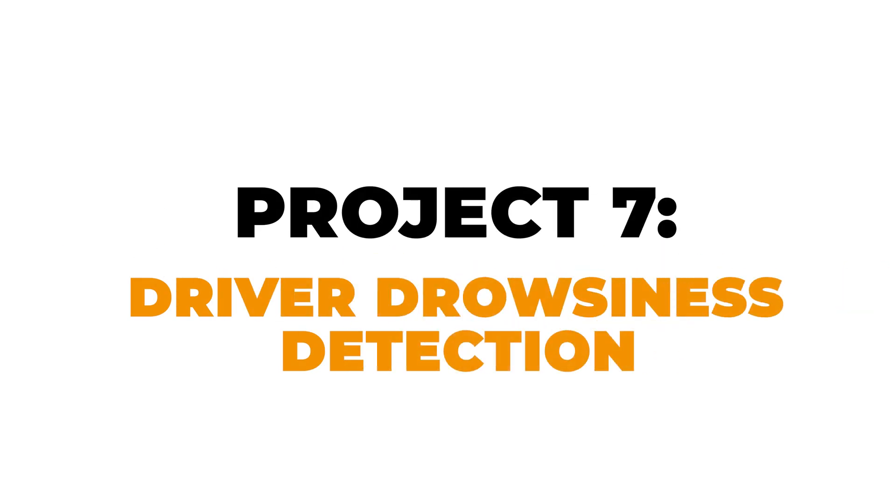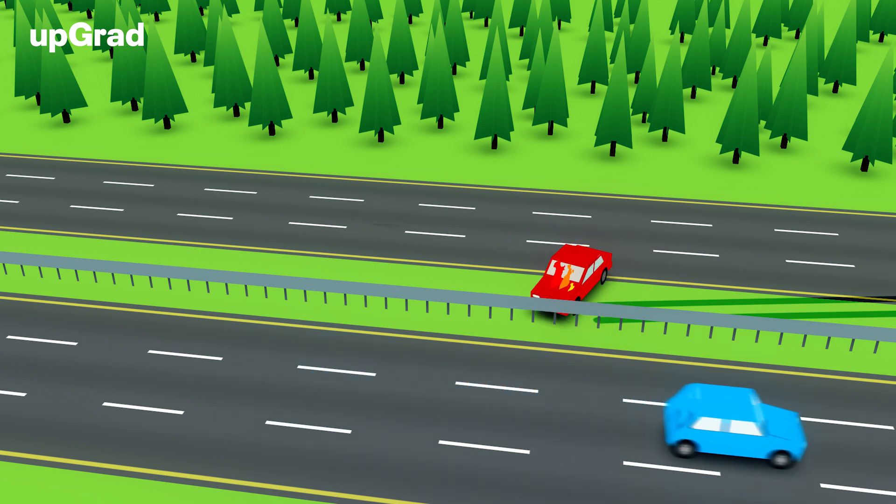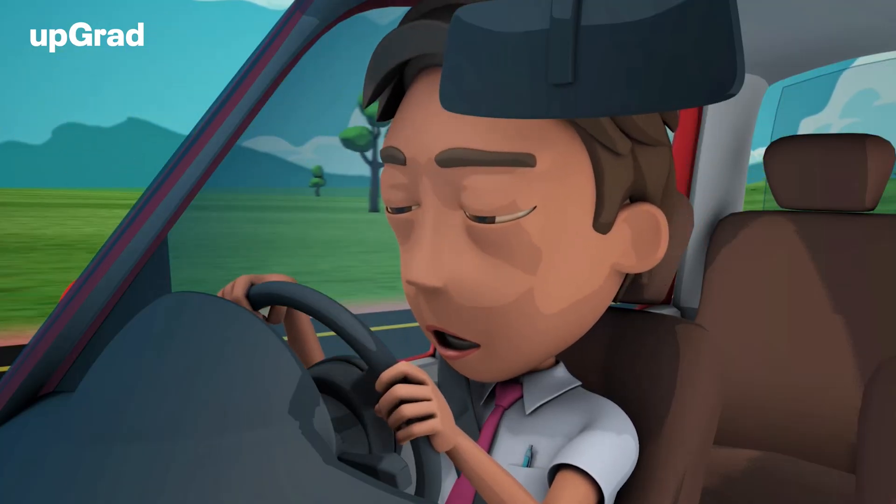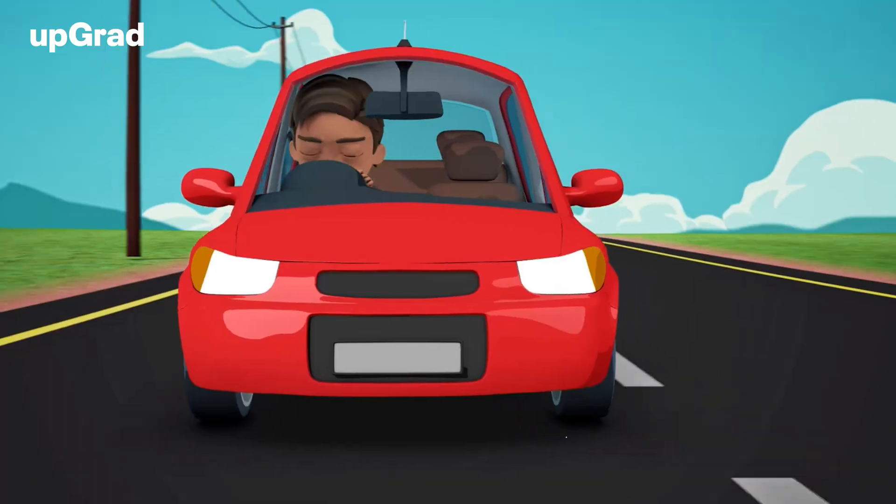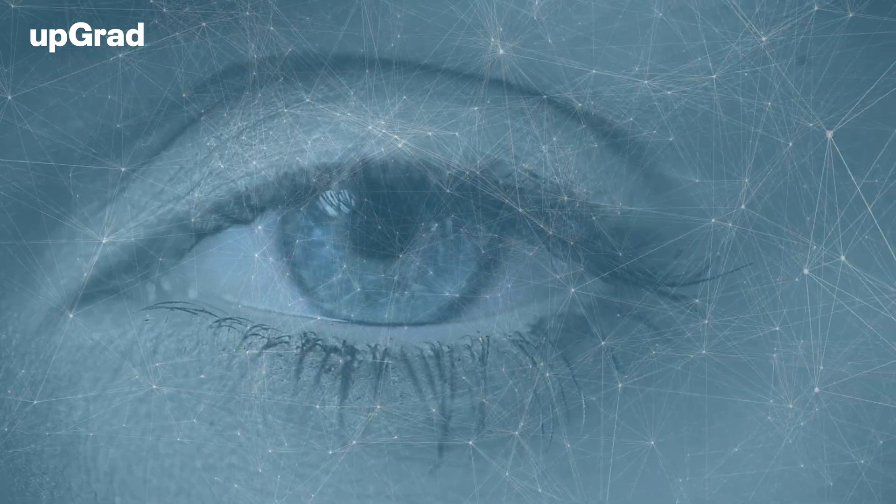Project 7: Driver Drowsiness Detection. Many accidents happen because a driver fell asleep while driving. Using Keras and OpenCV, you can build a system to alert drivers when they're getting drowsy. You can implement a deep learning model to classify images where a human eye is open or closed. The model calculates a score based on how long the eyes remain closed throughout the driving session. If that score crosses a specified threshold, the model triggers an alarm. This project helps you learn about deep learning models and their application in real-time safety systems.